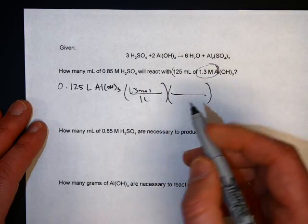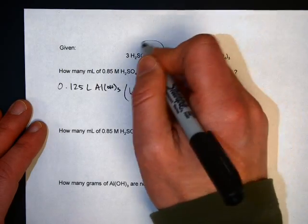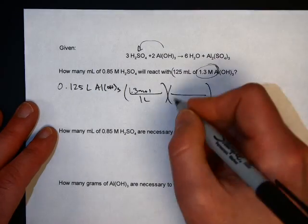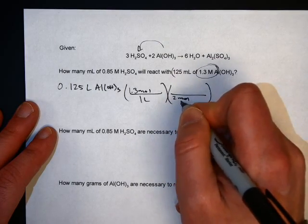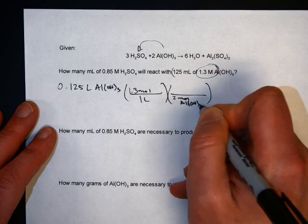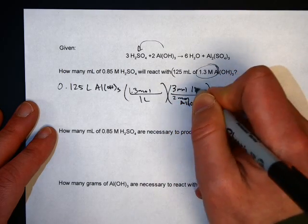Then use the mole ratio to go from Al(OH)3 here to the sulfuric acid H2SO4. It's a two to three ratio. So two moles Al(OH)3 will react to three moles of H2SO4.